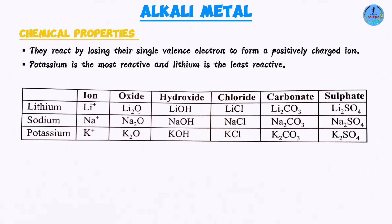Alkali metals, being very reactive, form a variety of compounds — but all the compounds they form will always have similar formulae. Looking at a table of lithium, sodium, and potassium: their oxides have the same formula pattern, their hydroxides are the same, and only the alkali metal symbol changes. This applies to chlorides, carbonates, and sulfates too. The reason is that because they belong to the same group, they all have the same valency — one valence electron, valency of one.